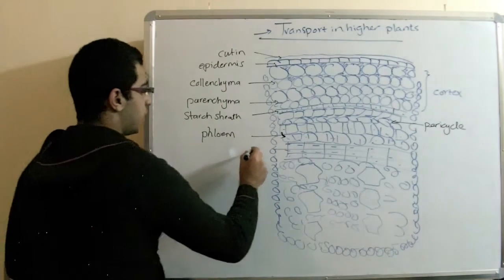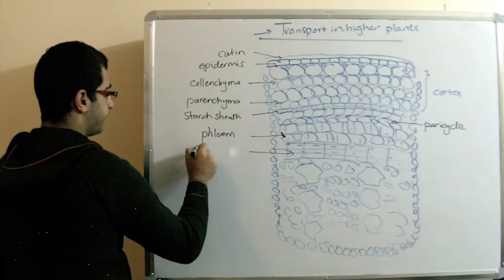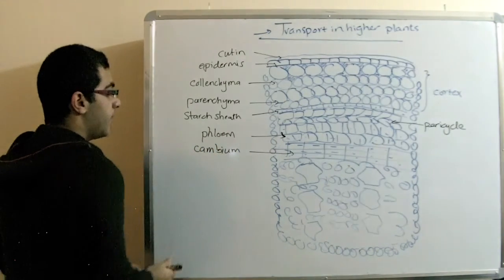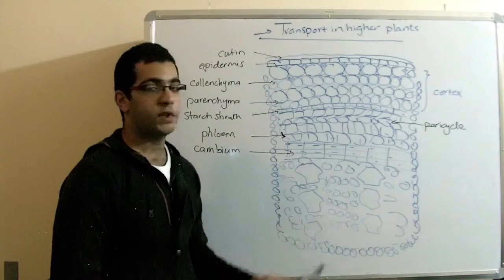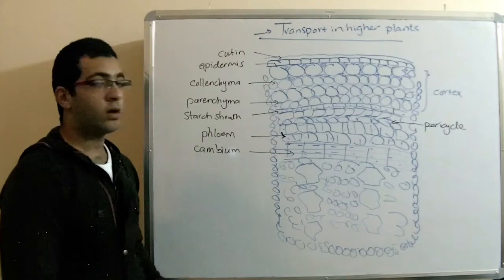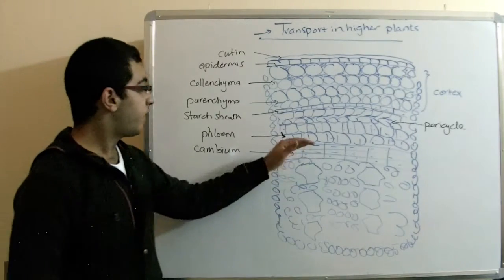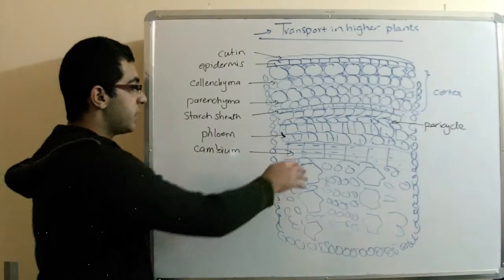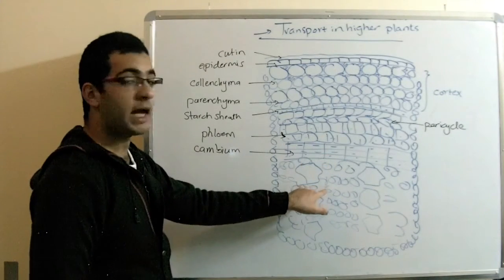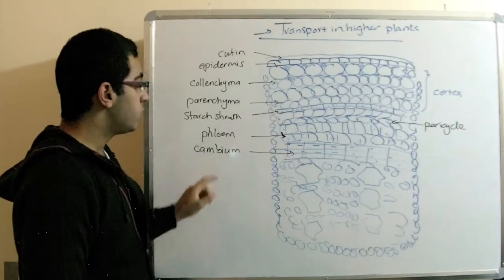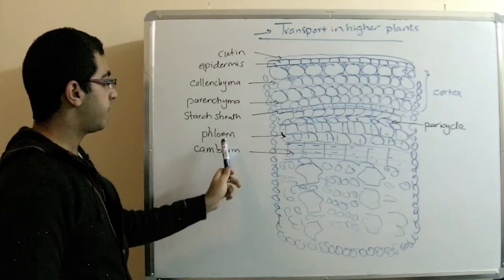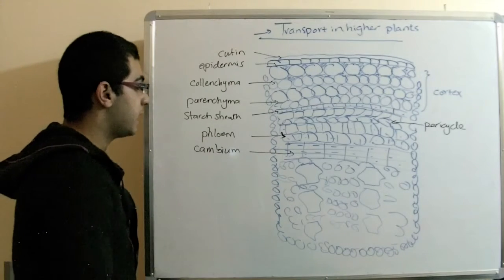The next layer is called the cambium. And this cambium consists of meristematic cells. And the meristematic cells are cells that are growing up. So, it provides the phloem with new tissues upwards and it provides the xylem vessels with new tissues inwards. So, it provides upwards the phloem and inside for the xylem vessels.